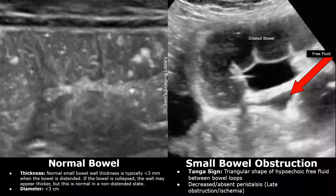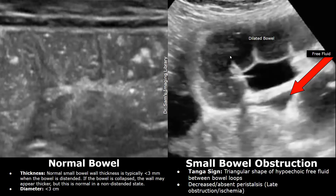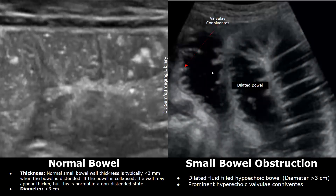This is another case showing the tanga sign — you can see a triangular fluid collection between bowel loops. The bowel loops are dilated and appear hypoechoic with prominent hyperechoic intestinal folds. Peristalsis was absent in this case.